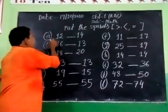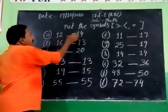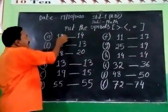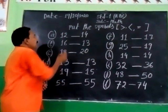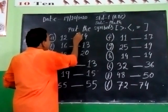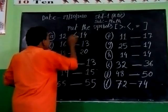Number 8: 12 and 14. 12 is less, 14 is greater. 13 is less than 15.